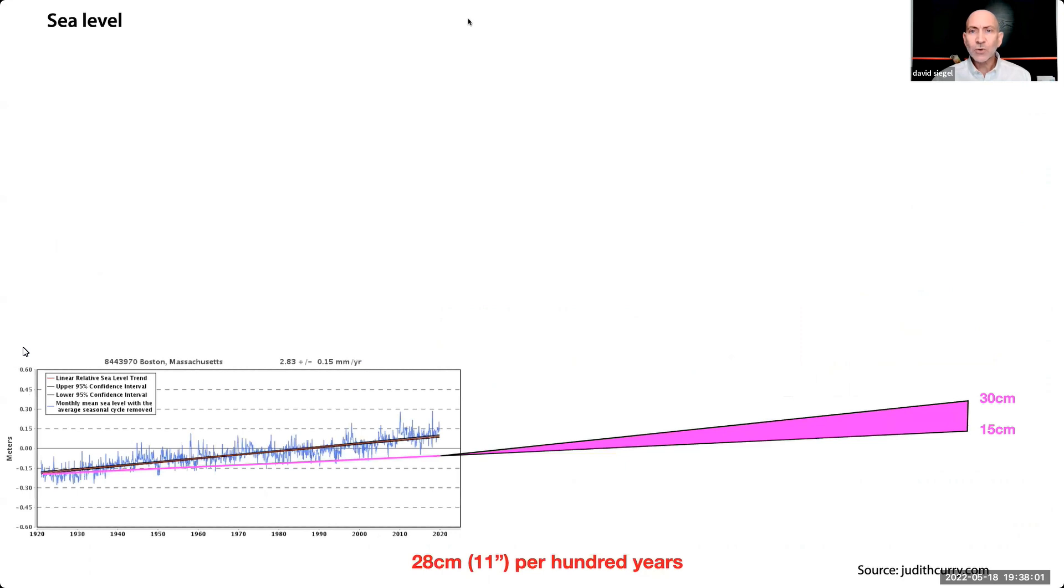Judith Curry estimates a true rise of 3 millimeters per year, which would give us 30 centimeters. One foot over the next century, regardless of how much CO2 goes into the atmosphere. Okay, so we can establish a 95% confidence interval of between 15 and 30 centimeters of sea level rise over the next 100 years. That's about 10 inches of sea level rise by 2120.